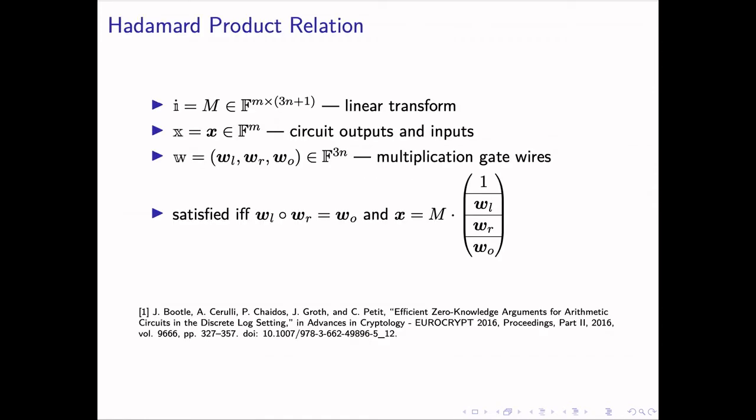Claymore is built for the arithmetic representation of circuits called the Hadamard product relation, shorthand HPR. This is a variant of the circuit representation proposed by the work of Butoh in 2016. This relation is indexed by matrix M, which is determined by the circuit. The instance of HPR is a sparse vector X corresponding to the public inputs and outputs of the circuit. The witness W consists of three vectors that respectively correspond to the wires of the left inputs, right inputs, and outputs of the multiplication gates. The instance and witness pair satisfies this HPR if the multiplication of the left inputs and the right inputs exactly produce the values of the output wires, and the wire values satisfy the linear relations specified by the matrix M.